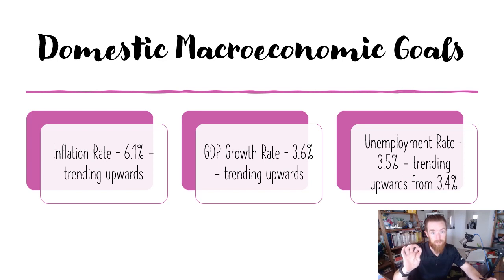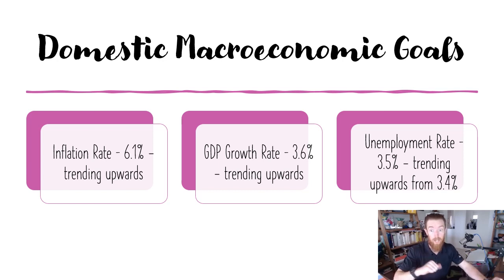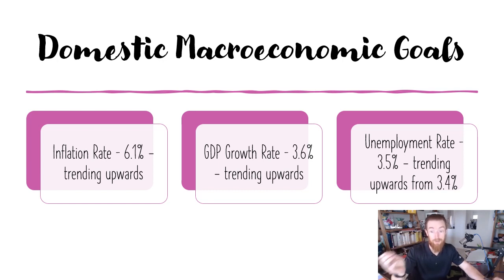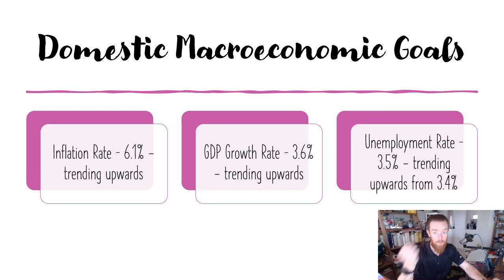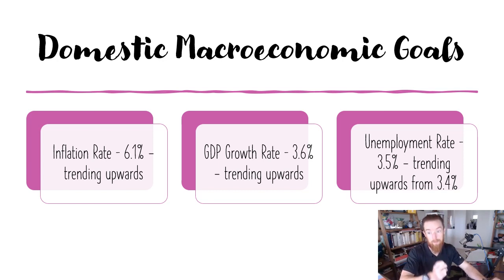So firstly, our domestic macroeconomic goals. Our three goals are: the goal of low inflation, so the general level of prices increasing at a rate of 2-3% on average over time; strong sustainable economic growth, which is to have the total value of production increasing at a rate of 3-3.5% real GDP growth per annum without causing any unnecessary inflationary, external or environmental pressures; and the goal of full employment, which is the lowest unemployment rate possible without causing unnecessary inflationary or external pressures, where around 4.5% natural unemployment exists. You can also talk about NAIRU in your full employment goal definition.